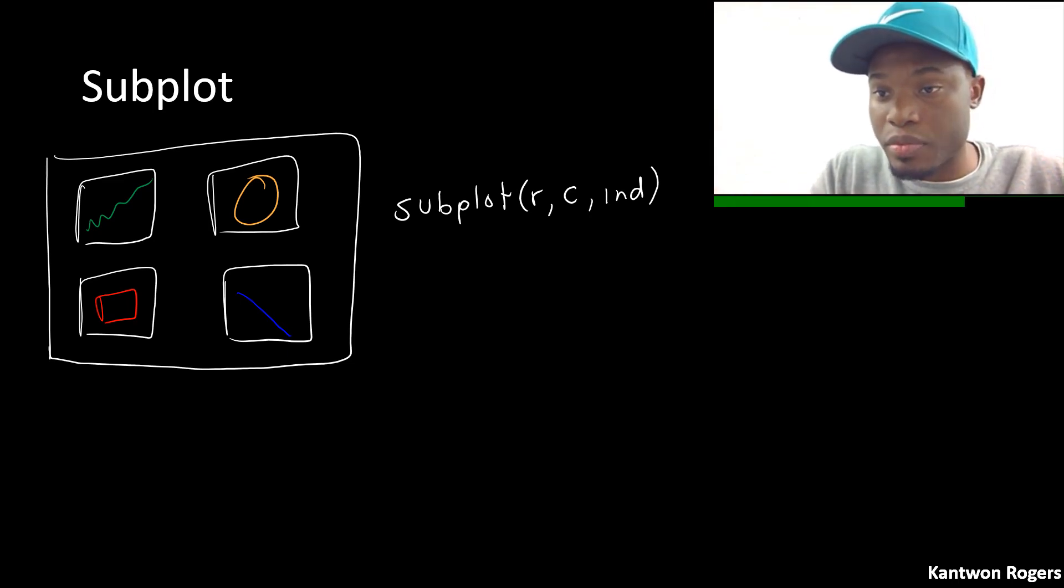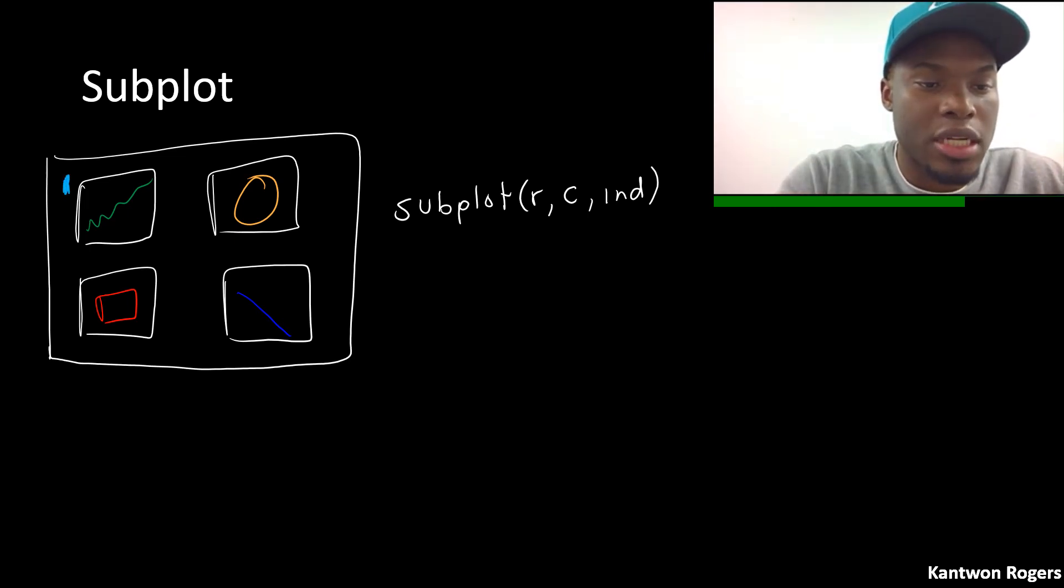The indexing for subplot is not how you would think it would be because it's not the same thing as an array. Remember in an array linear indices go down the columns and in a subplot it goes across the rows. So this is the first index. This is the second index. This is the third. This is the fourth.